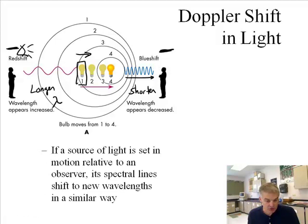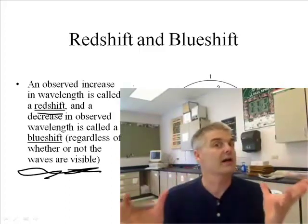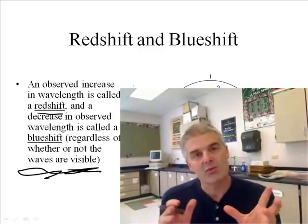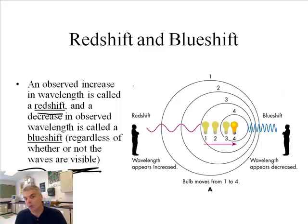If the source of light is set in motion relative to an observer, its spectral lines, remember the spectral lines we just talked about in the previous podcast, shift to new wavelengths in a similar way. An observed increase in wavelength is called the red shift. And a decrease in the observed wavelength is called a blue shift, regardless of whether or not the waves are visible. By the way, this assumes they're visible, but sometimes, of course, we've learned that there are other kinds of light besides the things you can see with your eyes. There's ultraviolet, infrared, x-rays and such. We can see the red shift or the blue shift, or just basically it tells you if it's moving away, away is a red shift, or towards you, blue shift.